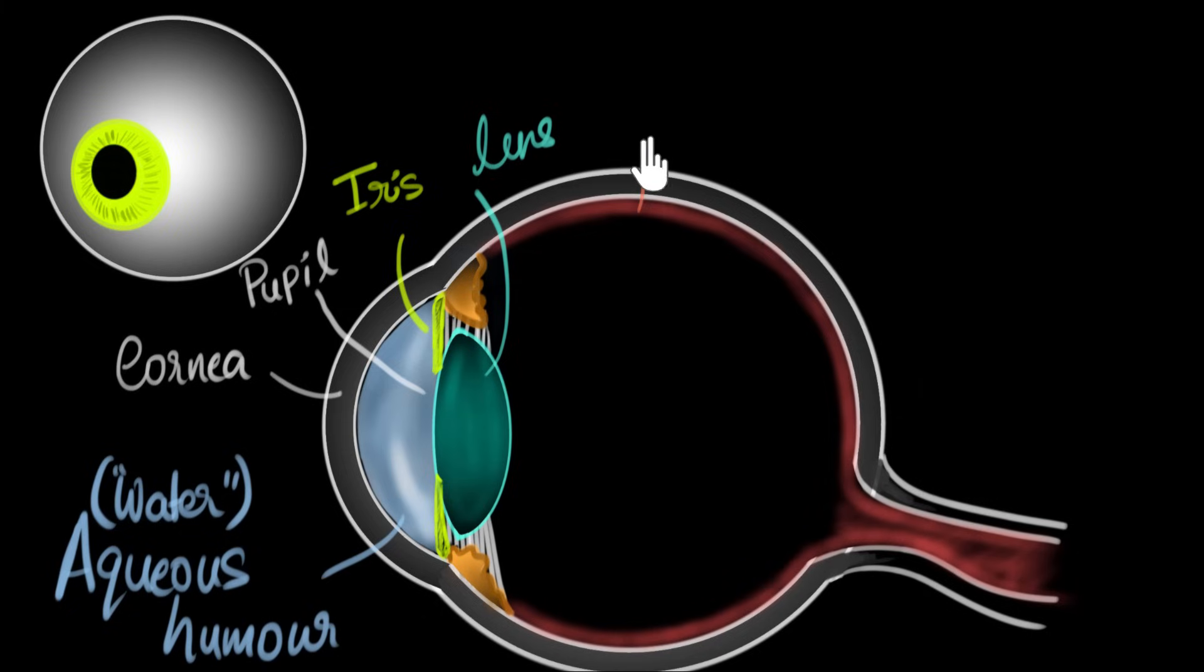So let's write that down. This light sensitive cell covering, cell lining, is called retina. And so in order to see anything clearly, the light from that object must get focused exactly on the retina. If it doesn't, it'll look blurred to us.